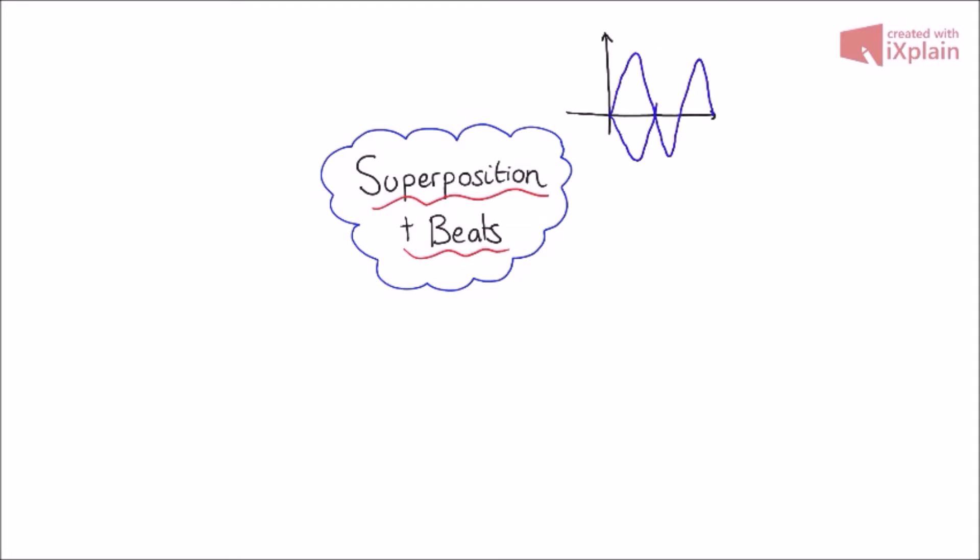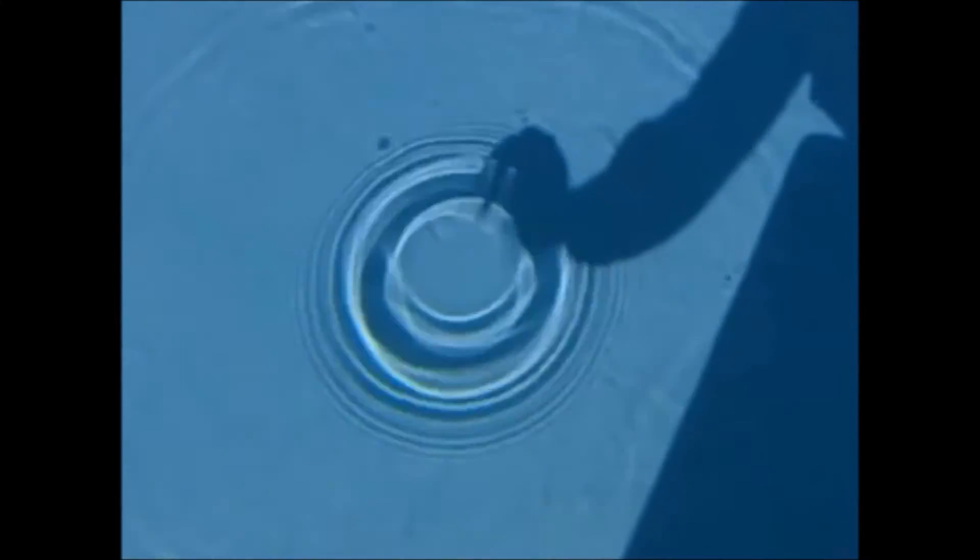Hi and welcome to a UCL Physics Revision video about superposition and beat frequencies. Why do we see ripples appear in ponds? Why do we see such distinct interference patterns emerge from double slit experiments?